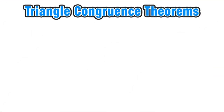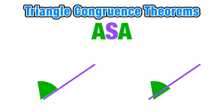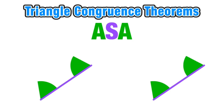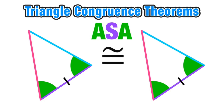Our next congruence theorem is Angle-Side-Angle. When we have two triangles with a pair of corresponding congruent angles, a pair of corresponding congruent sides, and another pair of corresponding congruent angles, we have enough information to prove congruence using Angle-Side-Angle. It's important to notice that the congruent side is in between the two congruent angles. When this is the case, we have enough information to prove that the two triangles are congruent by Angle-Side-Angle.